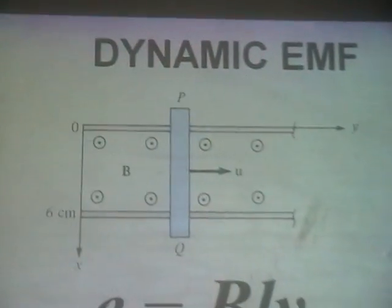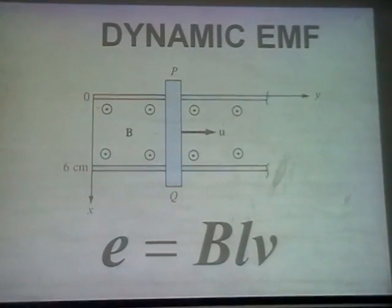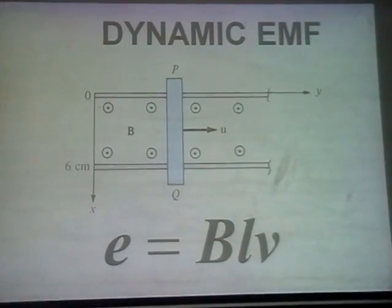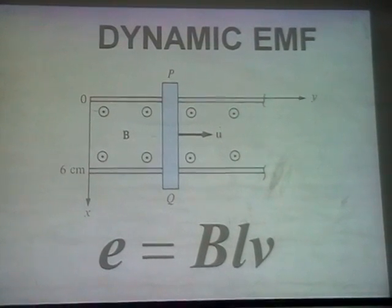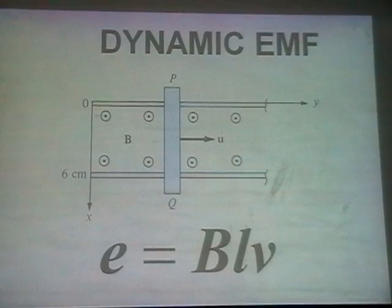Faraday said in simple language: a time-varying magnetic flux will produce a voltage. Voltage divided by distance is electric field. So Maxwell says a time-varying magnetic field will produce an electric field. This leads to the concept of dynamically induced EMF — what is statically induced EMF and what is dynamically induced EMF?